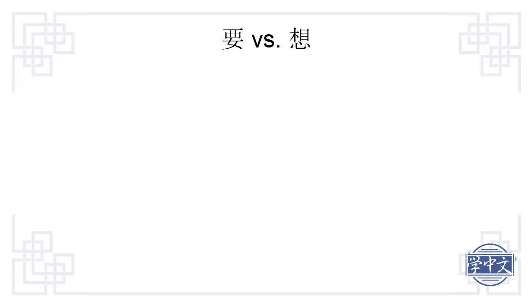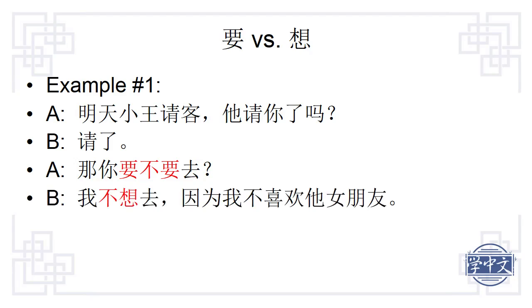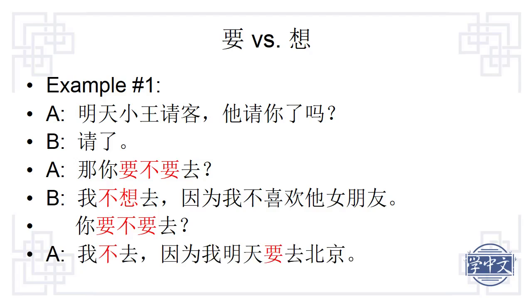Let's look at two examples. Example one: 明天小王请客，他请你了吗 — 小王 is hosting a dinner party tomorrow, did he invite you? Yes, he did. 那你要不要去 — Do you want to go? Do you plan to go? Response: 我不想去，因为我不喜欢他女朋友 — I don't want to go because I don't like his girlfriend. Are you going? 我不去，因为我明天要去北京 — I am not going because I am going to Beijing tomorrow.